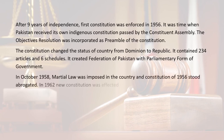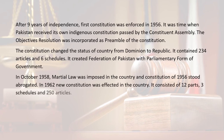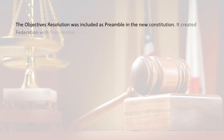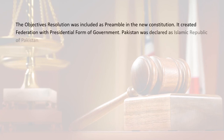In 1962, a new constitution was effected in the country. It consisted of 12 parts, 3 schedules, and 250 articles. The Objectives Resolution was included as the preamble in the new constitution. It created a Federation with a presidential form of government. Pakistan was declared the Islamic Republic of Pakistan.